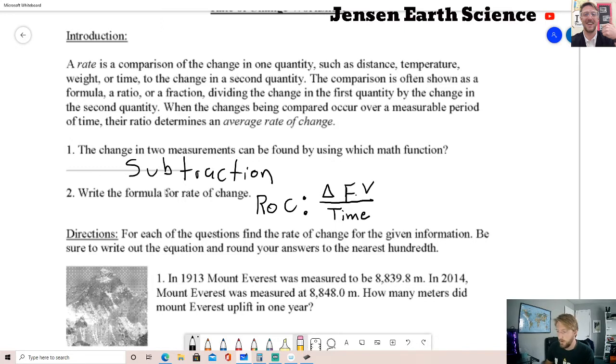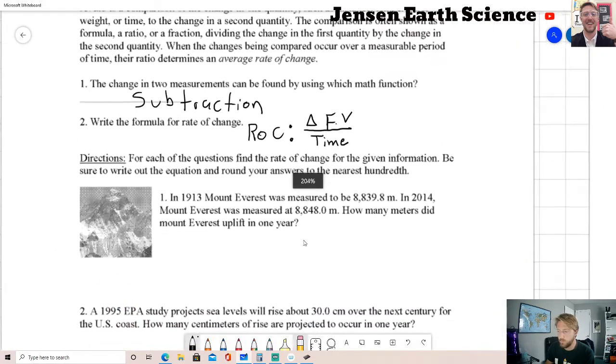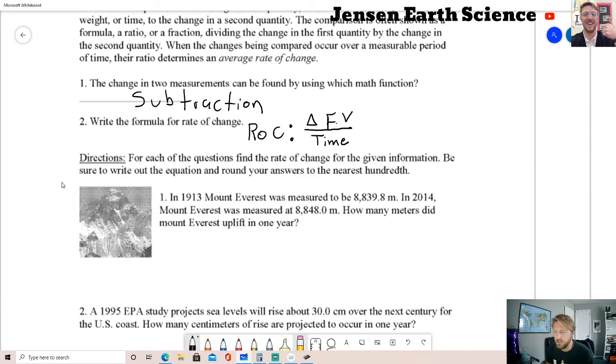Our first question says in 1913 Mount Everest was measured to be 8,839.8 meters. In 2014 Mount Everest was measured at 8,848.0 meters. How many meters did Mount Everest uplift in one year? Uplift just means to gain elevation or to be pushed upwards into the atmosphere, so it's actually getting taller. What I would like to start with when I'm doing a rate of change question is ROC equals change in field value over time. That's our basic equation.